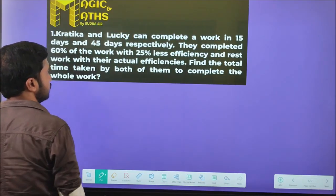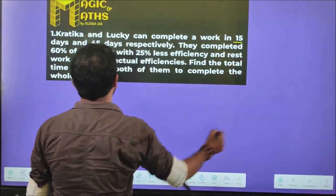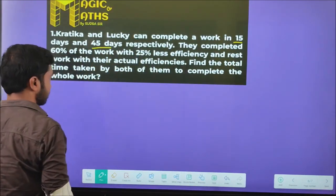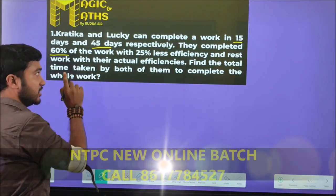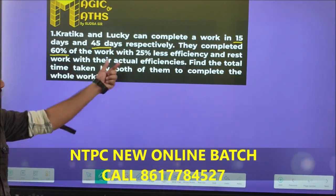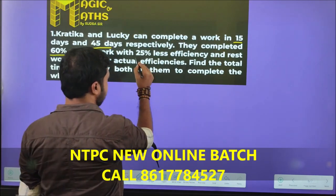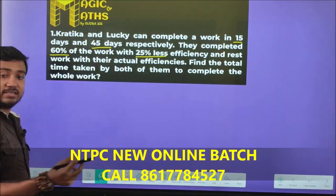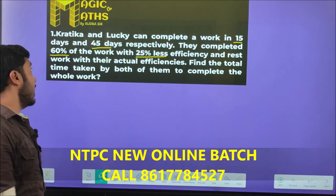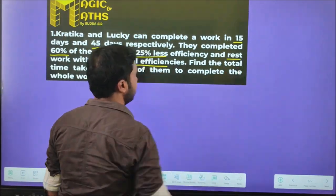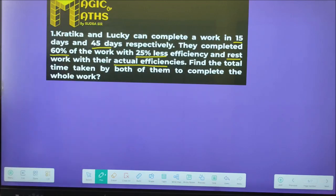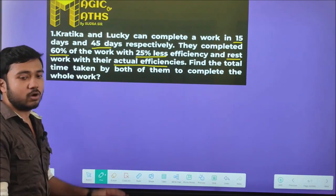Kratika and Lucky can complete work in 15 days and 45 days respectively. They completed 60% of the work with 25% less efficiency than their actual efficiencies. Find the total time taken by both of them to complete the whole work, with rest work done at their actual efficiency.